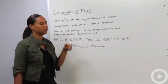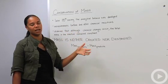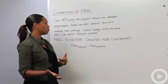Late in the 18th century, the analytical balance was developed, and that allowed scientists to measure how much of your reactant was present and how much of your product was present.